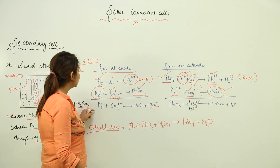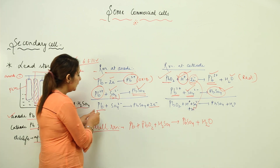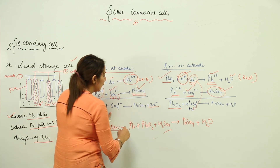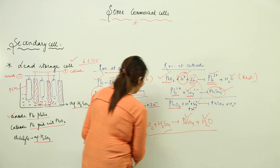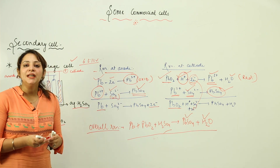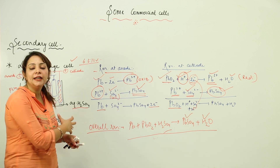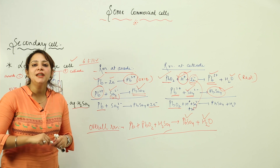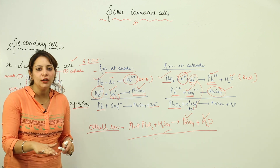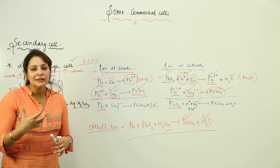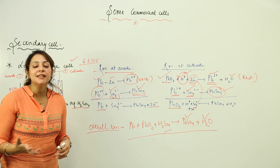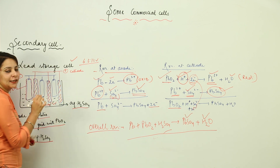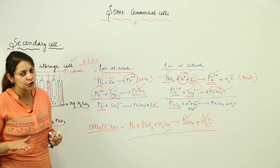The overall cell reaction is: Pb + PbO₂ + H₂SO₄ → PbSO₄ + H₂O. Over time, hydrogen ions and sulfate ions from the electrolyte are consumed, so the concentration of H₂SO₄ falls. The electrolyte is effectively converted into layers of PbSO₄ deposited on both electrodes, which eventually stops the reaction.